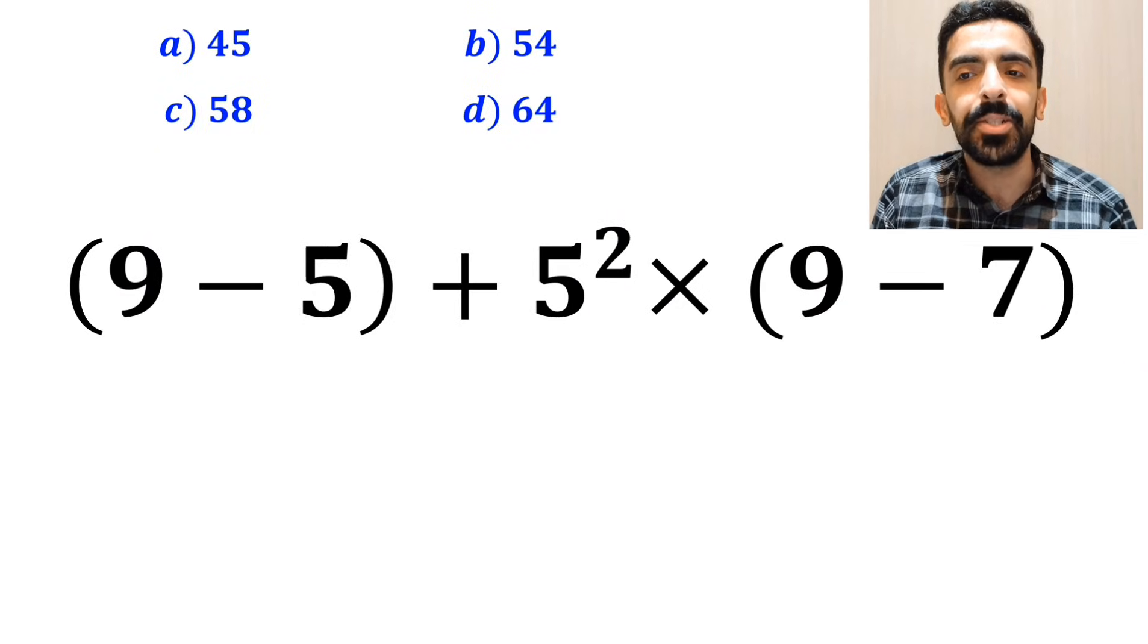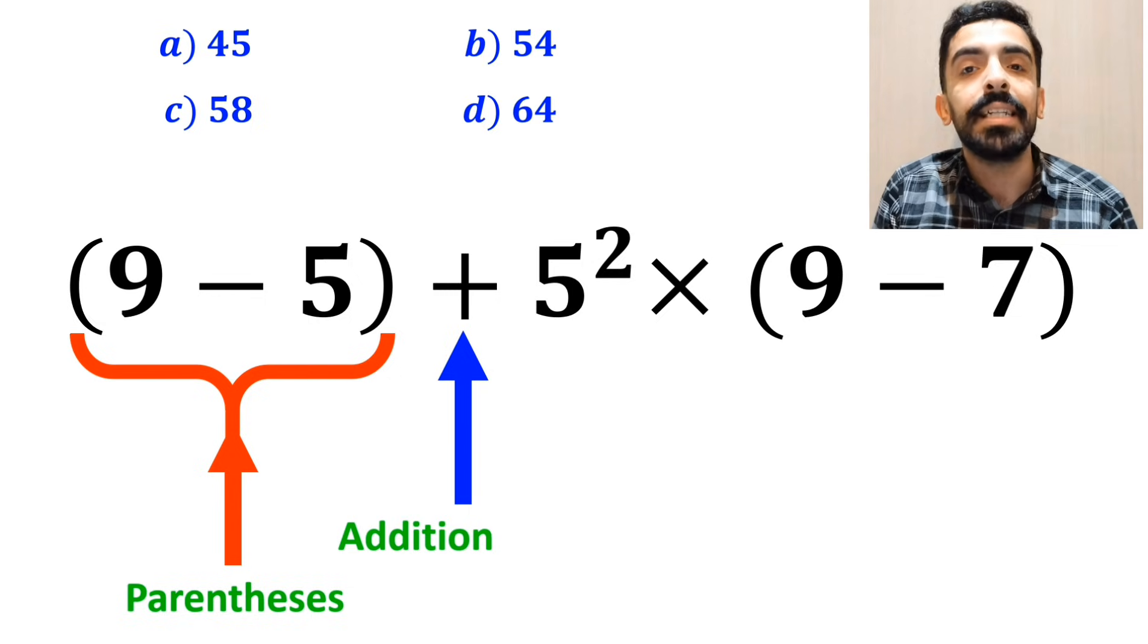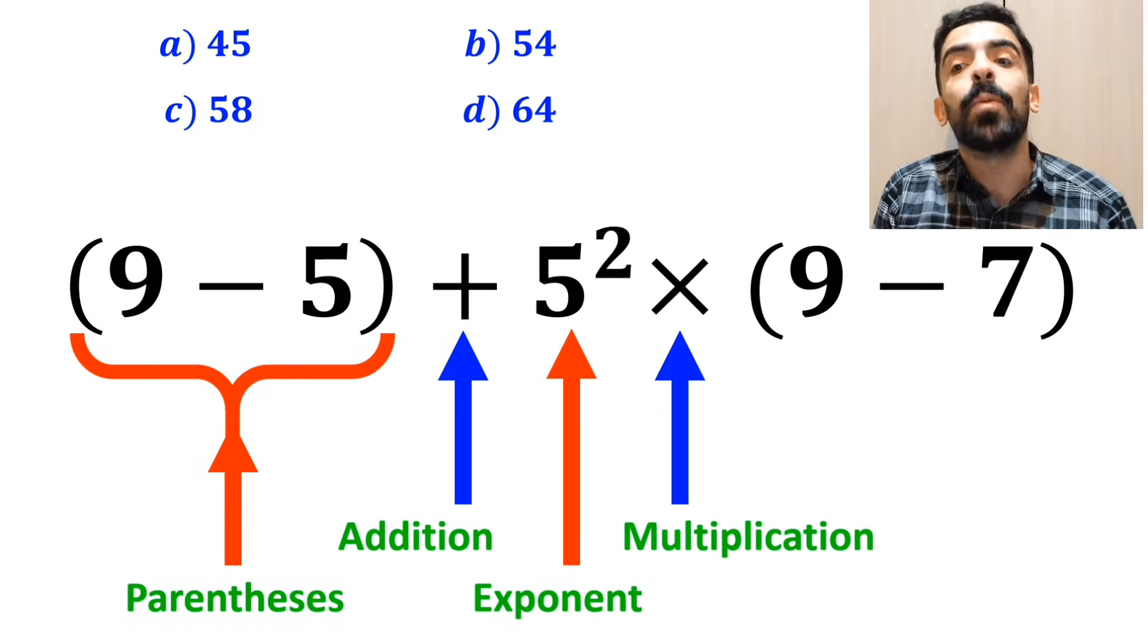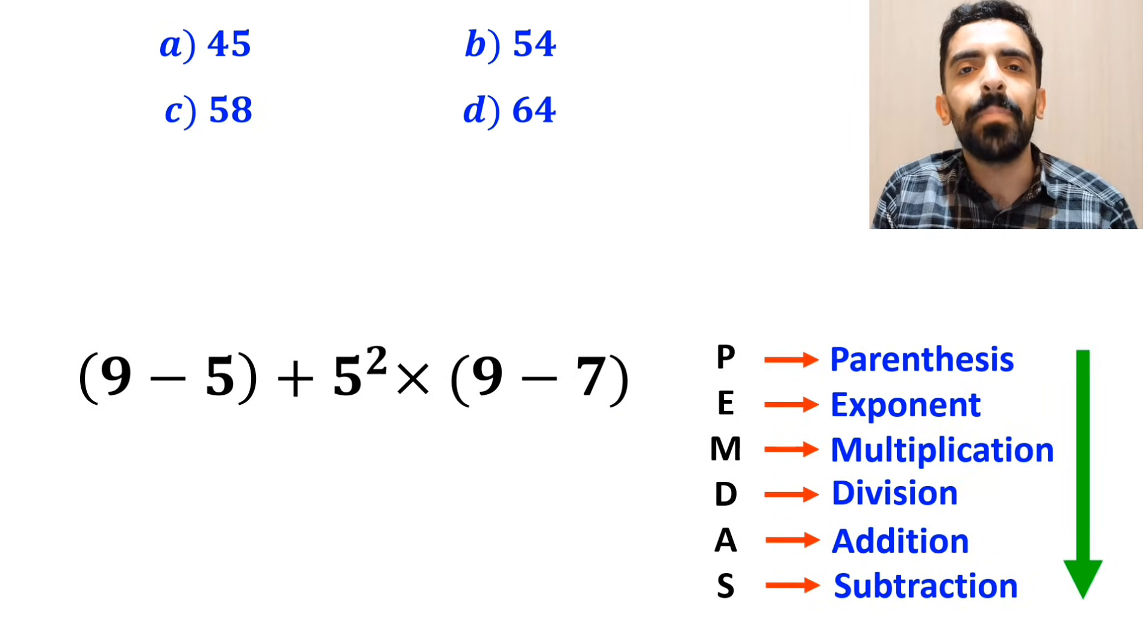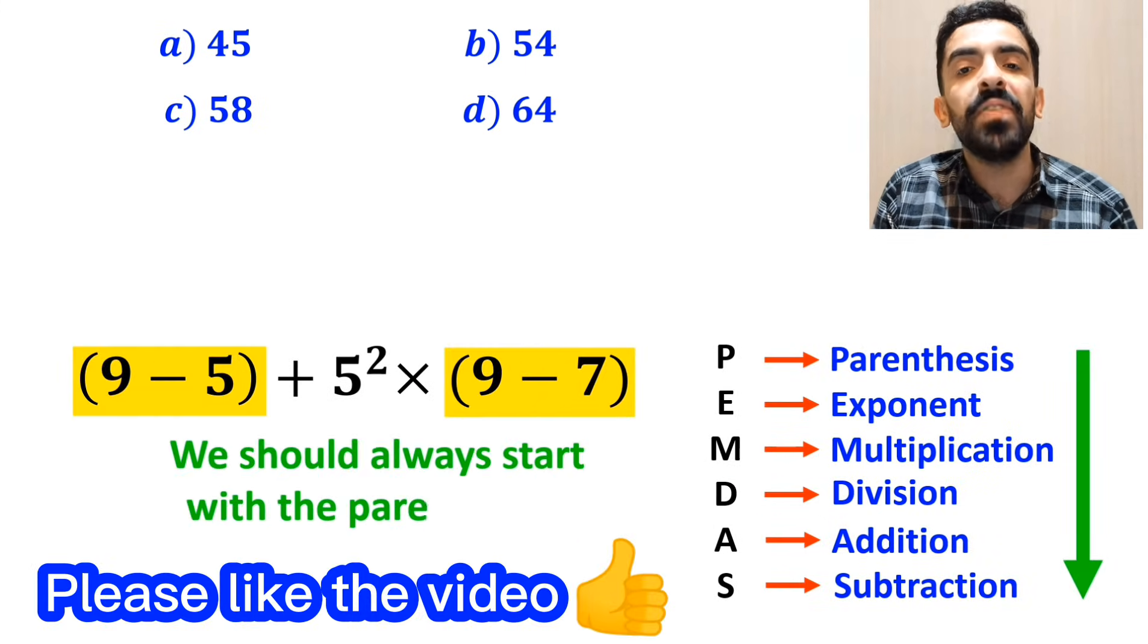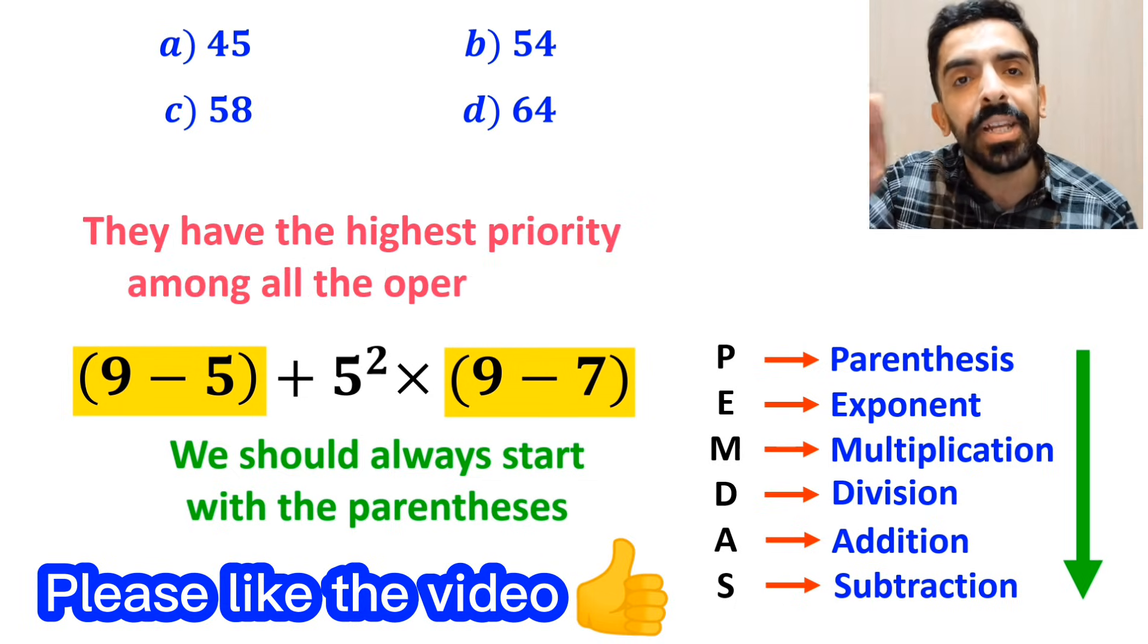Alright, as you can see on the screen, in this expression, first we have parenthesis, then an addition sign, followed by an exponent, then a multiplication, and finally another parenthesis. According to the PEMDAS rule, we should always start with the parenthesis, since they have the highest priority among all the operations.